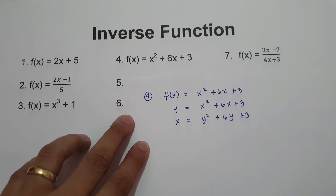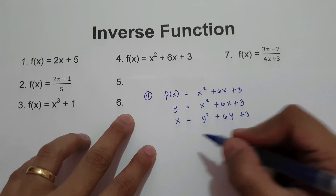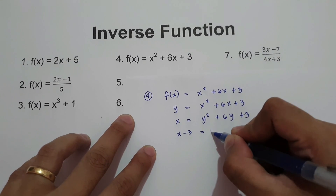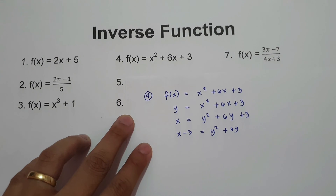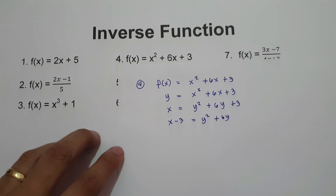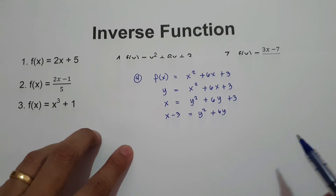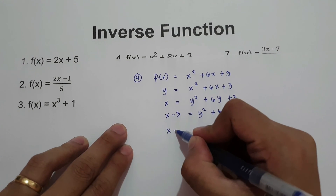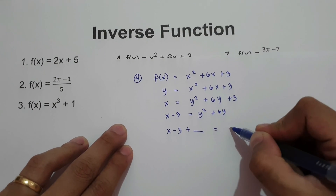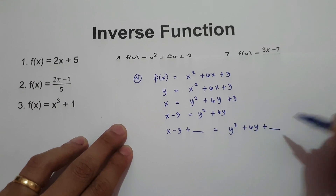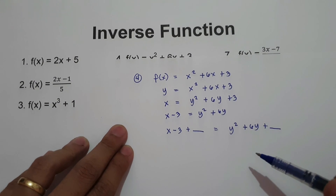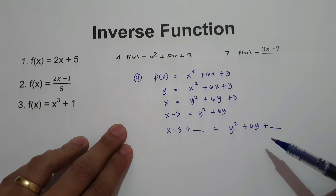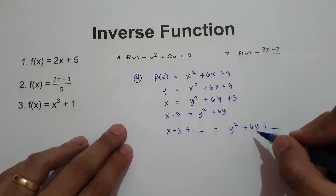Then move 3 to the side of x — it becomes negative 3 — so x minus 3 equals y squared plus 6y. To isolate the variable y, we are going to perform completing the square. We add a number on both sides of the equation: x minus 3 plus blank equals y squared plus 6y plus blank. We add 6 divided by 2, that is 3, then 3 squared, that is 9.